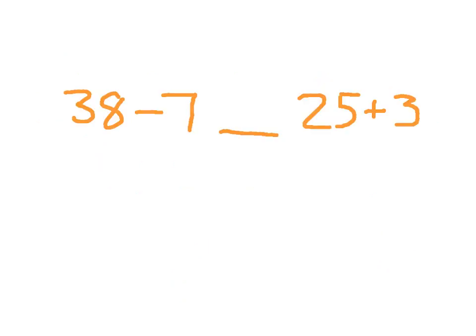I see a problem right here. I have 38 minus 7, and I'm comparing it with 25 plus 3. What I'm going to do is carefully evaluate on both sides. 25 plus 3 has a value of 28. 38 minus 7 has a value of 31, so I show my work there, and I know that 31 is bigger than 28. So that 38 minus 7 is greater than 25 plus 3.